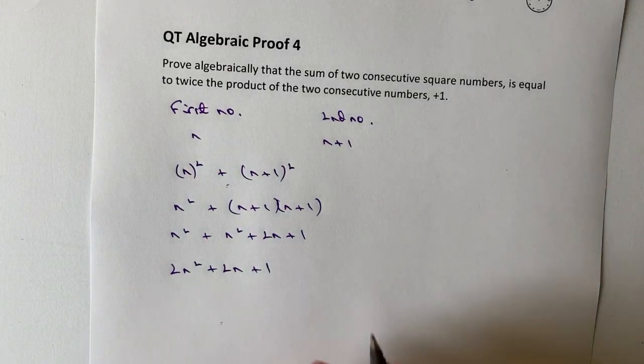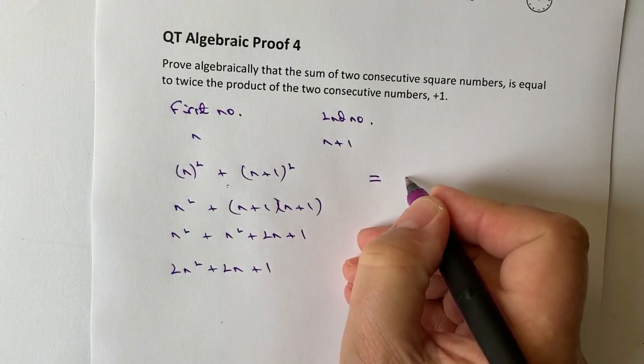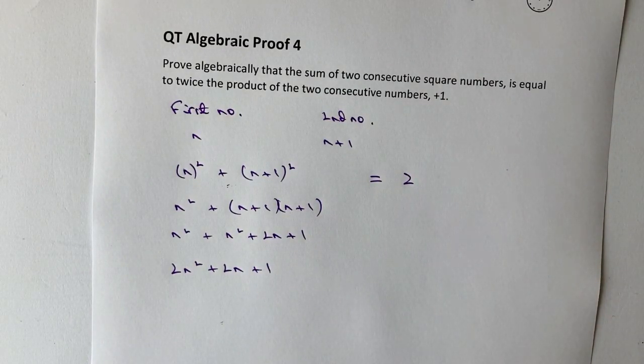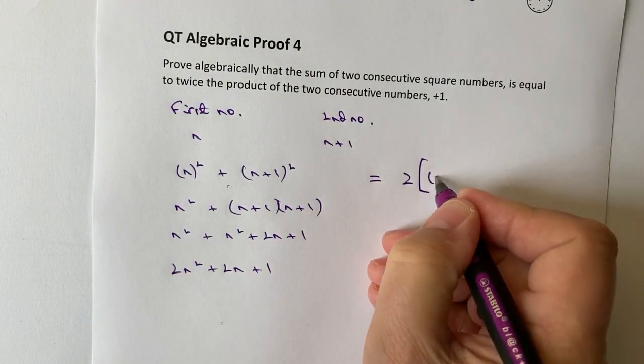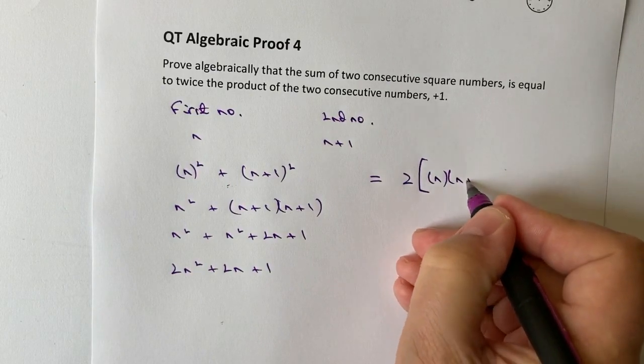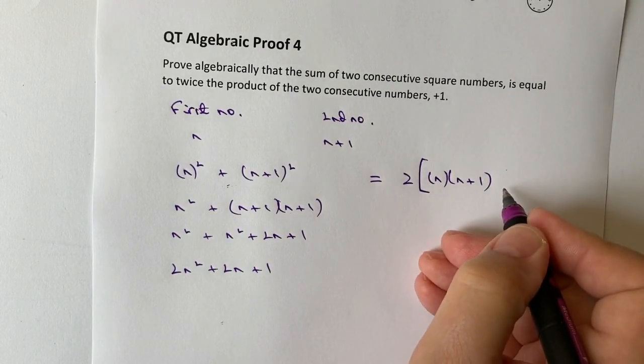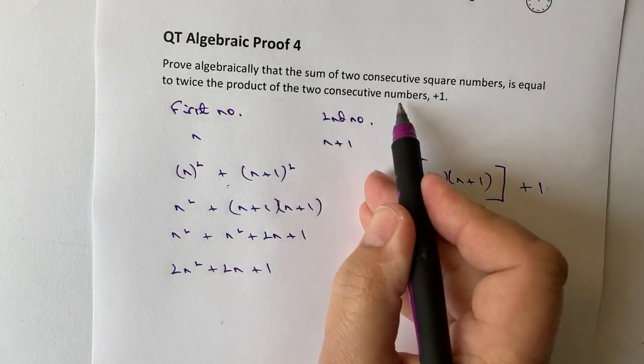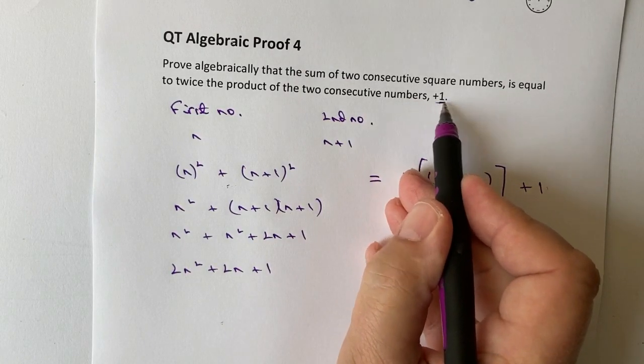All right. So we're saying that that must be equal to twice, two times the two numbers multiplied together. So I could write that, I'm going to use square brackets as n, the product multiplied by n plus one. And then plus one at the end, which is this plus one bit here.